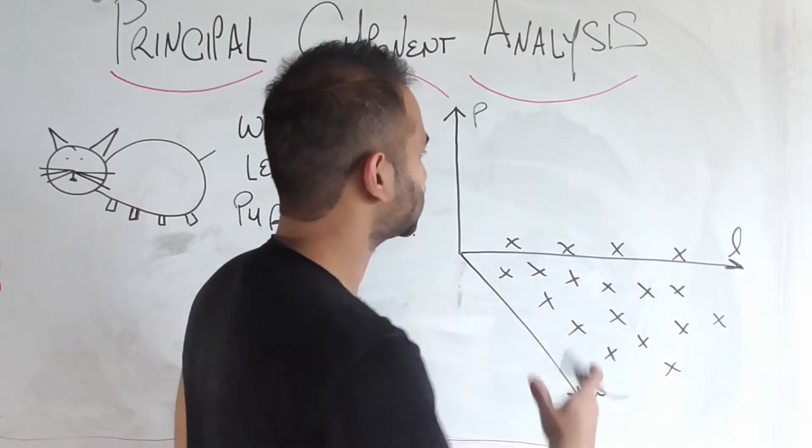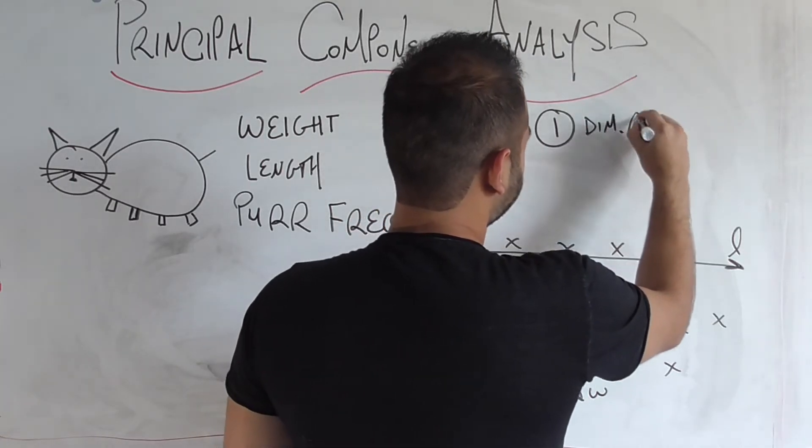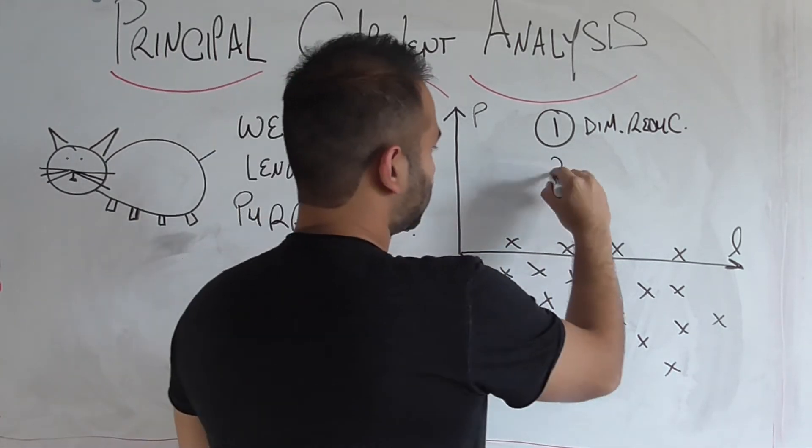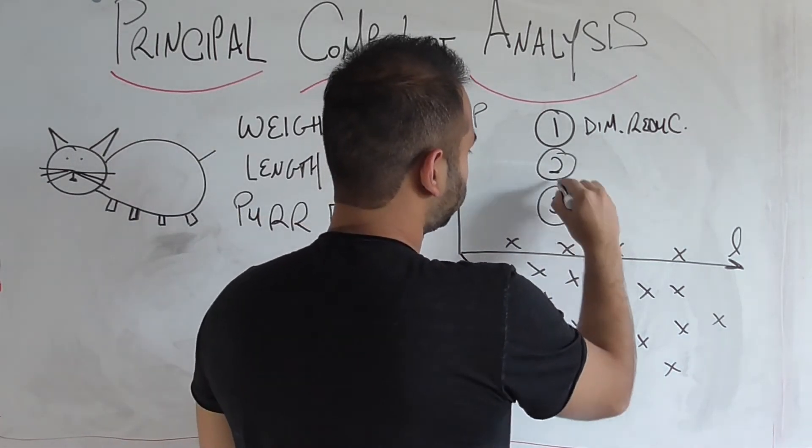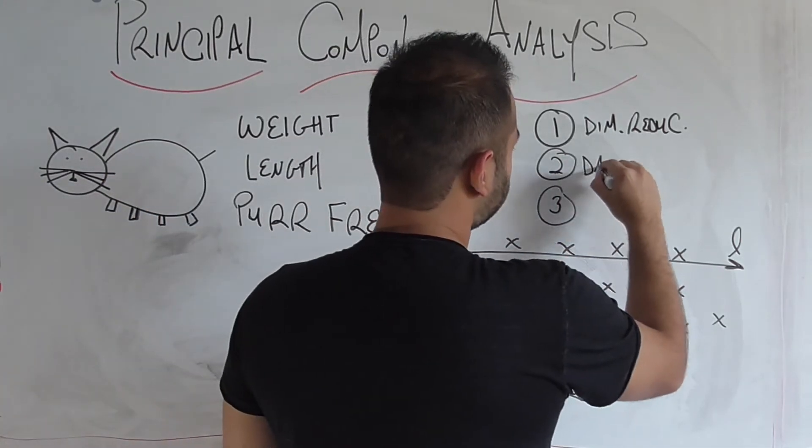So I want to get a running list going of applications of PCA. One will be dimensionality reduction. So this is the application we saw here. There's gonna be a second and a third one as well. A second one would be data visualization. So that's gonna be a big one too.